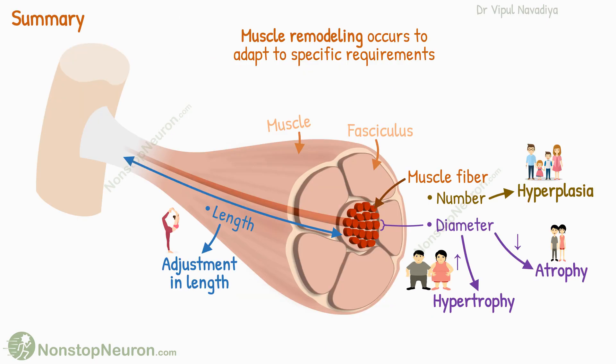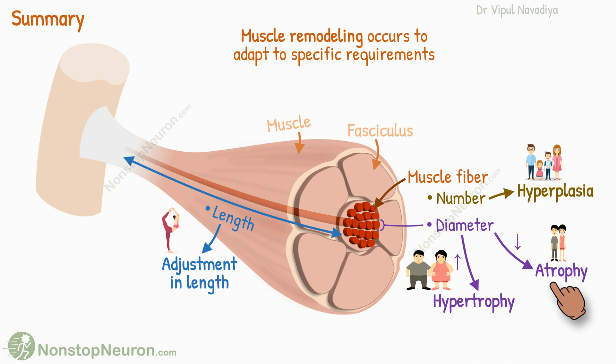Muscle remodeling occurs to match the requirements placed on the muscles. Hypertrophy is an increase in the total mass of the muscle by enlarging individual muscle fibers; it occurs when the muscle is loaded during the contractile process. Atrophy is a decrease in the total mass of the muscle, which happens when the muscle remains unused for an extended period.